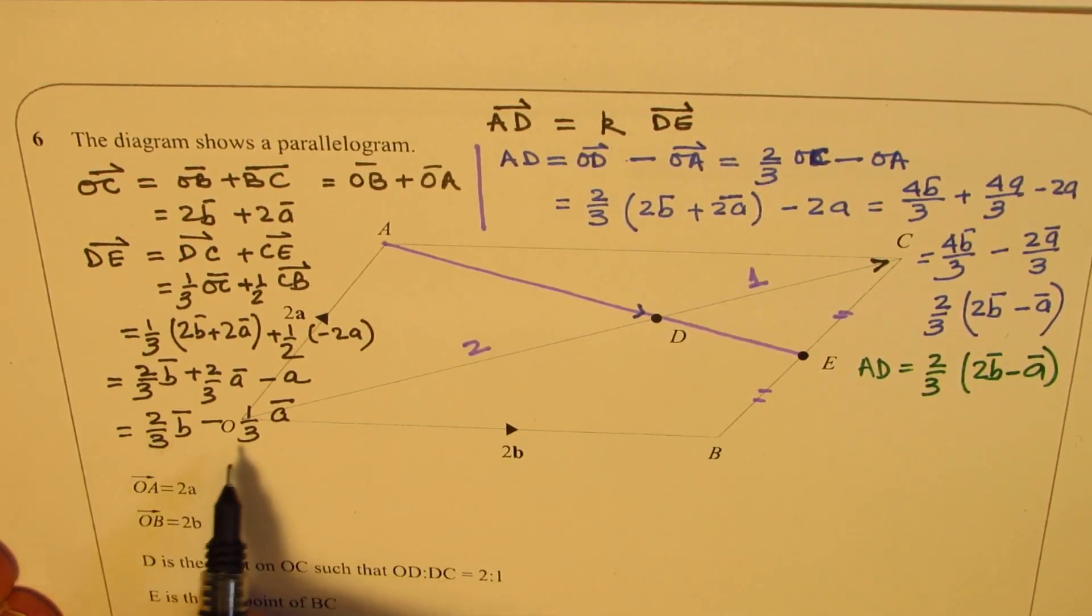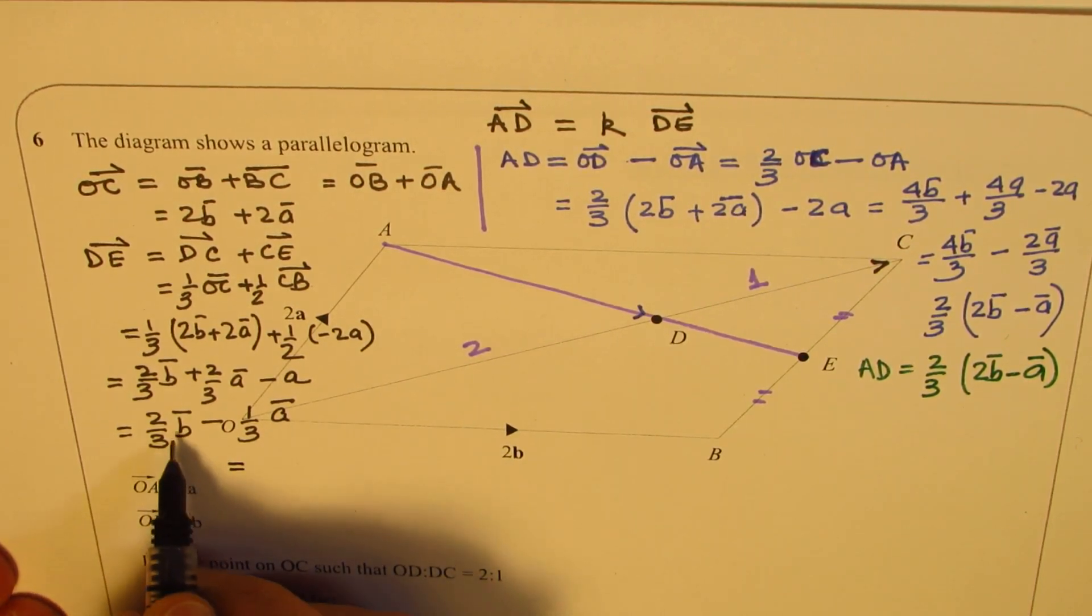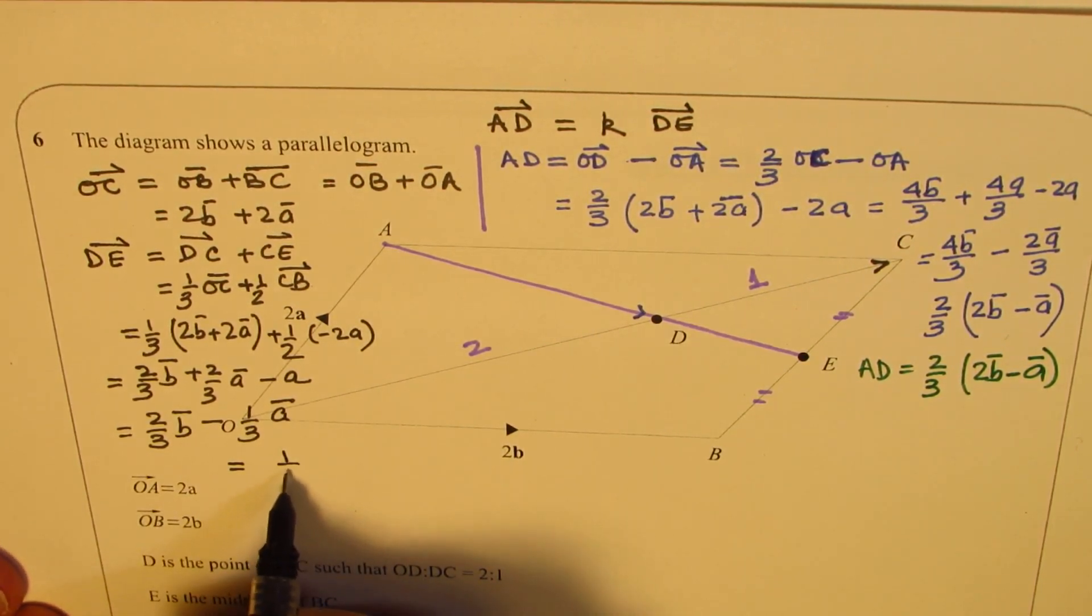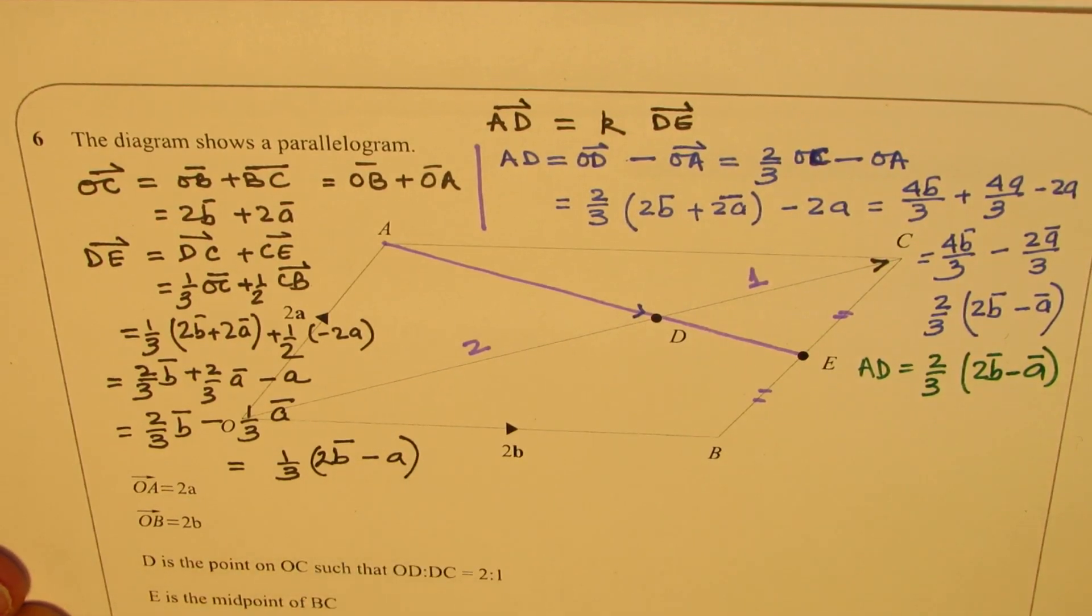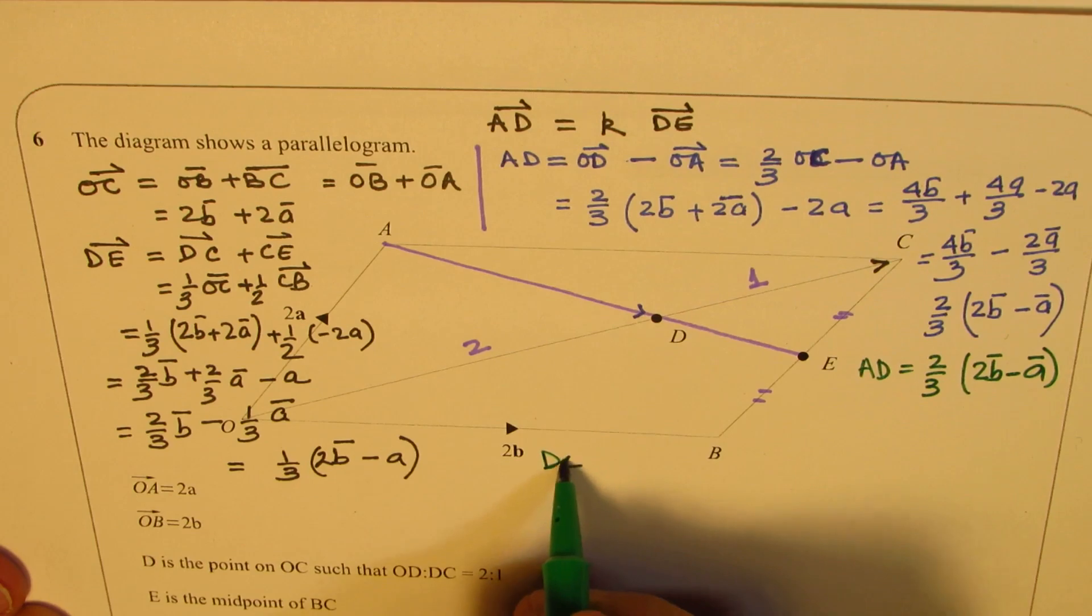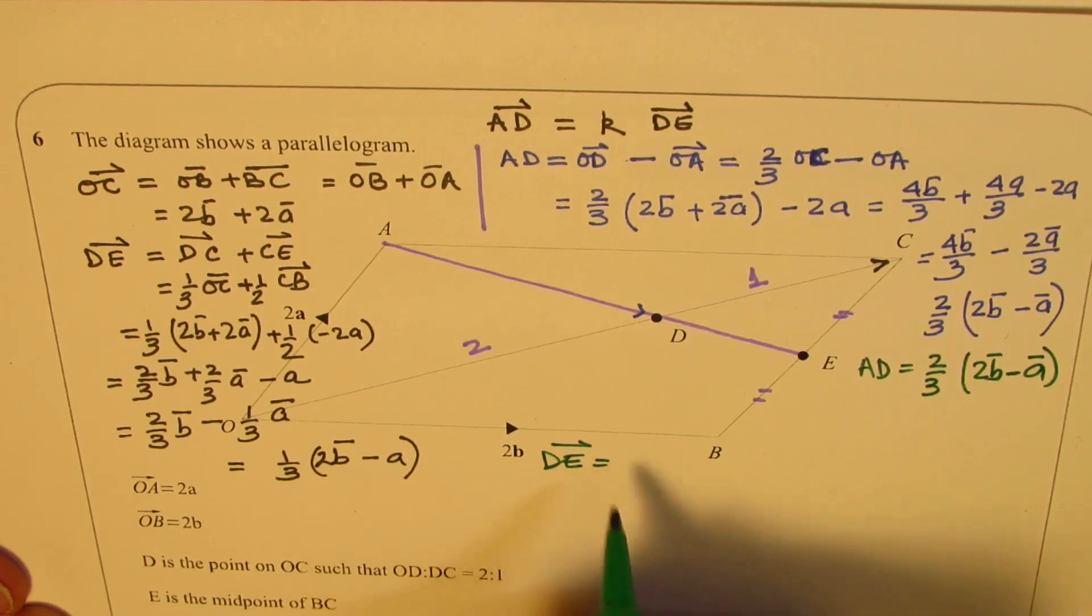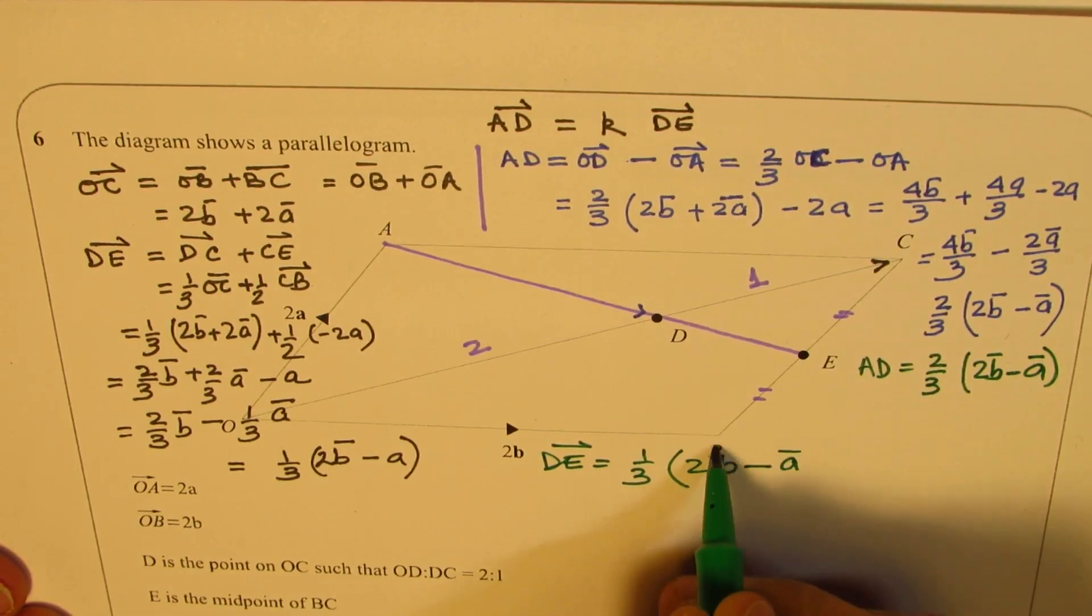We can take 1/3 common. So if I take 1/3 common, I get 2B here, 2 times B, and minus A there. So what we found here is that DE is 1/3 of 2B minus A.